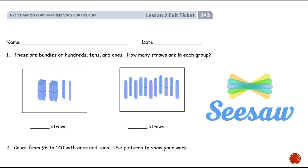It's your turn to show us what you know. Here's your exit ticket. You are going to first tell me how many straws are in each of these. You're going to count up your straws here and write your answer here. You're going to count up your straws here and write your number here. Then for number two, you're going to count from 96 to 140 with ones and tens. You need to use your pictures, the bundle groups like this, to show your work. After you're done doing that, you need to take a picture and seesaw your teacher. Good luck.